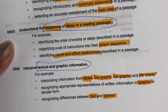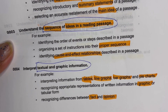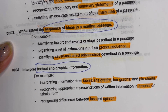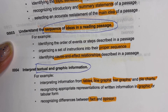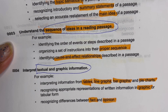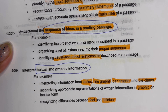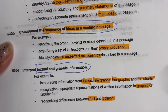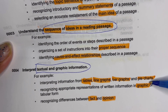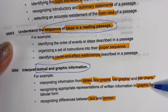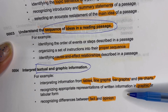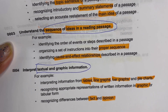You need to understand sequence and cause-and-effect relationships described in a passage, as well as textual and graphic information — including tables, line graphs, bar graphs, pictures, and graphic forms — and fact and opinion, meaning you need to recognize the difference between fact and opinion.